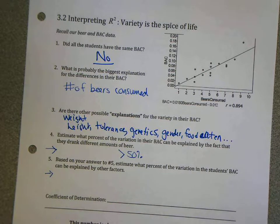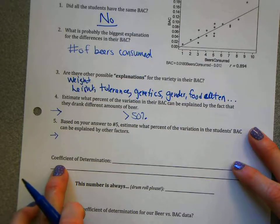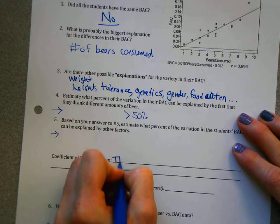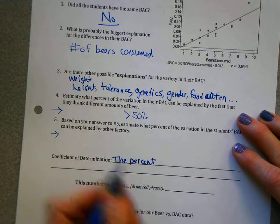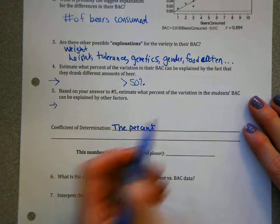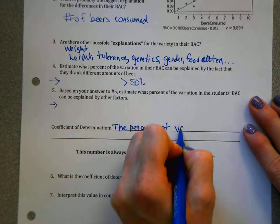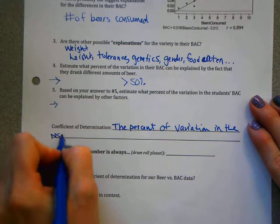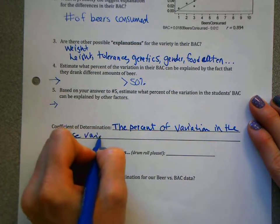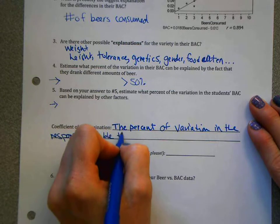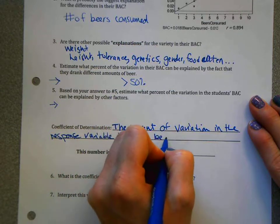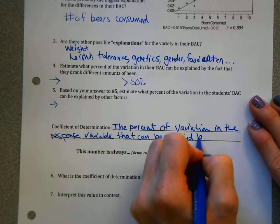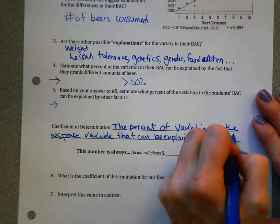Well, this number, this percent that we're talking about has a name, and it's called the coefficient of determination. Very fancy. And it is described as the percent. It's a very important new concept, guys, so stick with me. And it's the percent of variation in the response variable that can be explained by the explanatory variable.